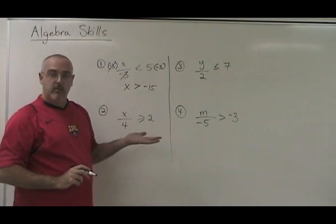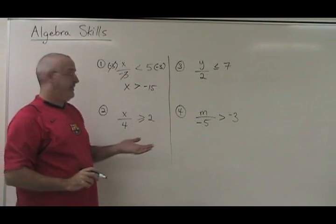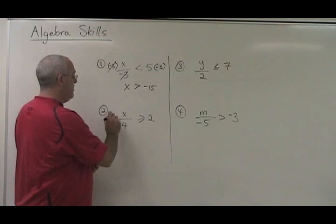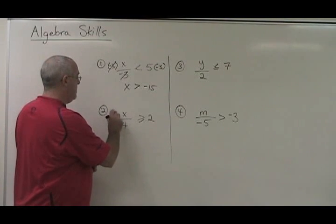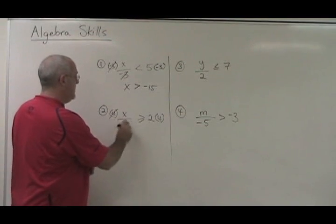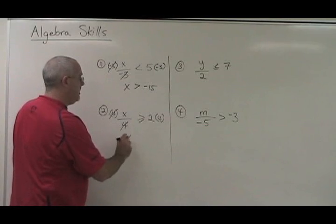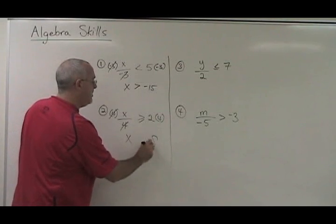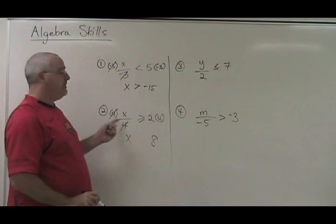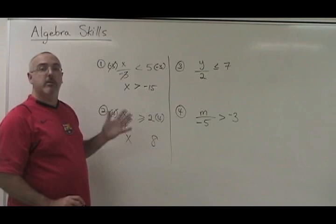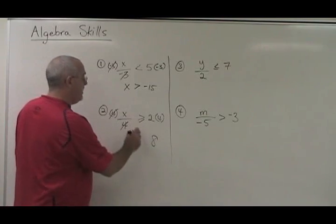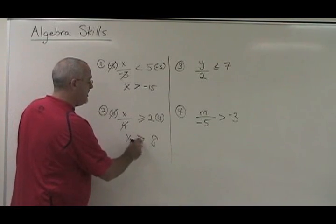It works with the same rule as division. Here, my x is being divided by 4. I must multiply both sides by 4 in order to cancel these and isolate my x. 2 times 4 is 8. But this time I multiply both sides by a positive number, so therefore the symbol stays the same.